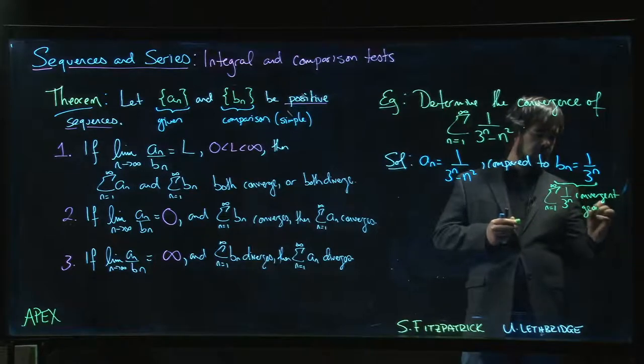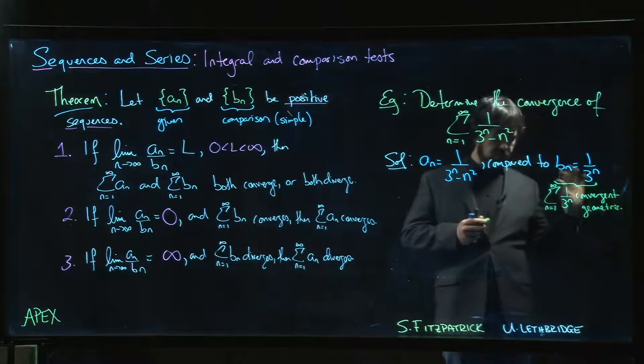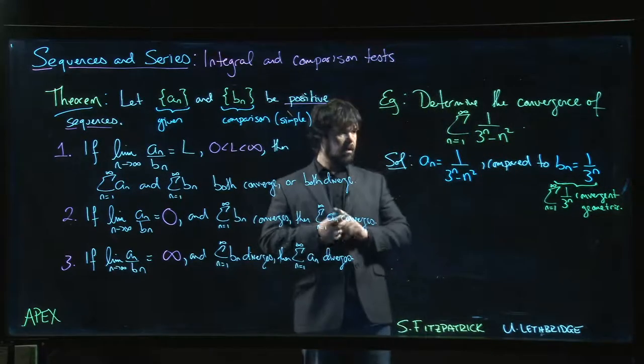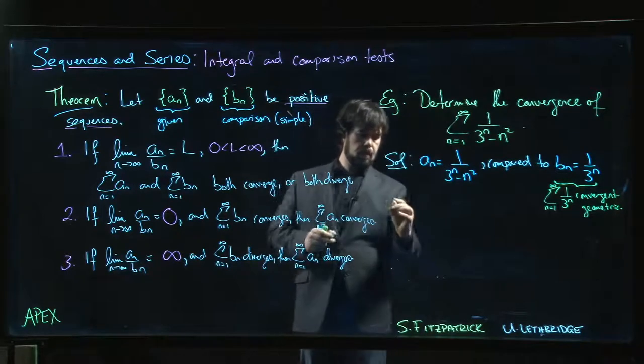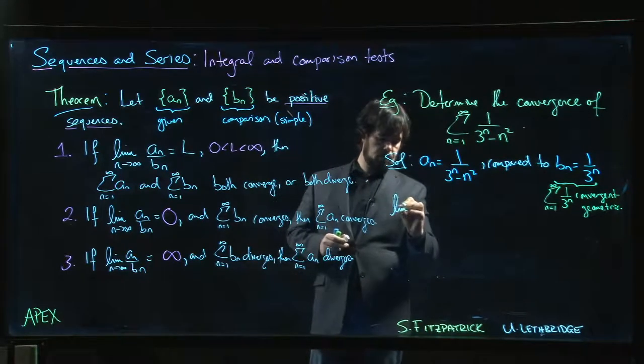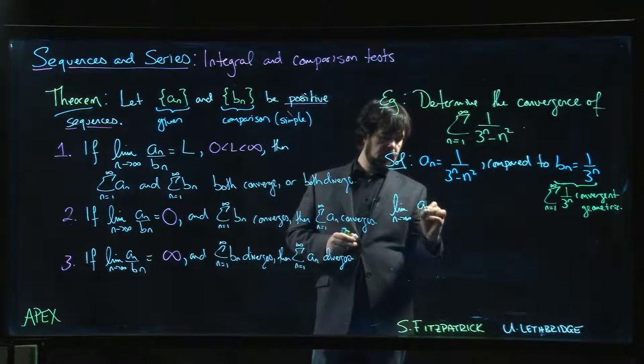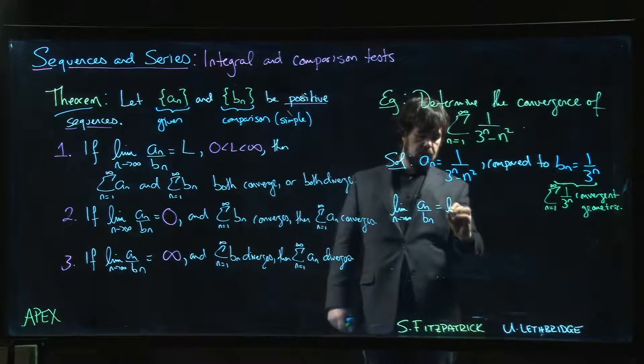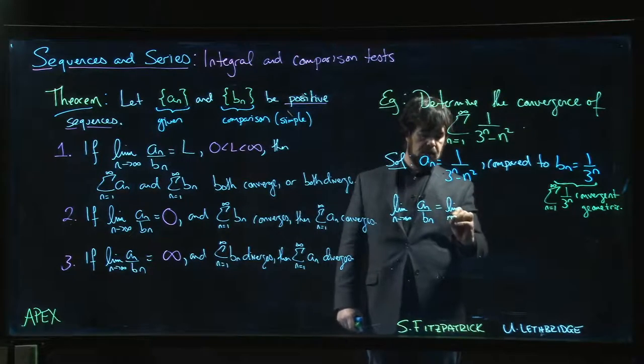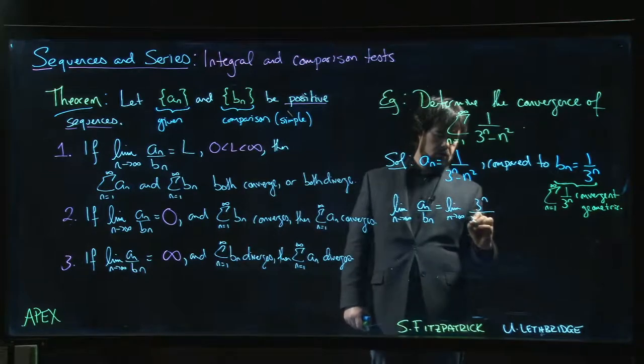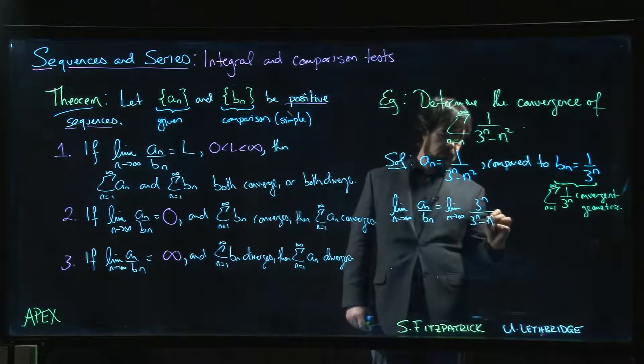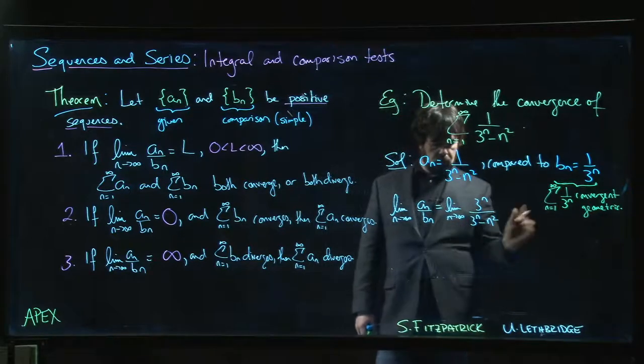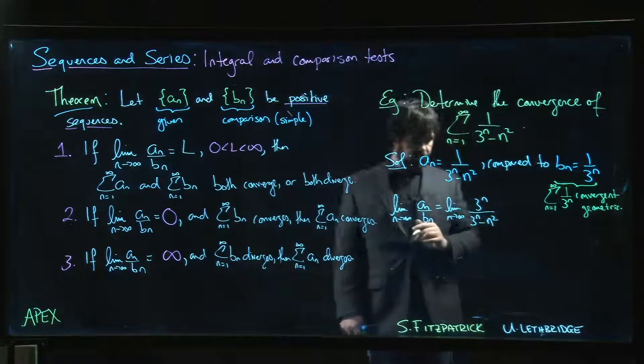Alright, let's take the limit - the limit as n going to infinity of a_n over b_n. Again, dividing by the reciprocal, we multiply by 3 to the n over 3 to the n minus n squared. Once again, infinity over infinity, so we'll use L'Hopital's rule twice.